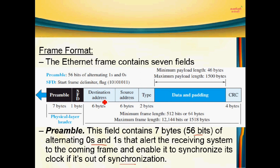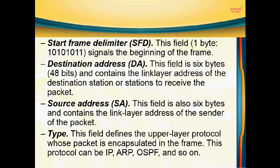Next we have destination address and source address. These are data link layer addresses — also known as MAC address or Ethernet address. Each address is 6 bytes long, which equals 48 bits. These fields indicate the destination and source nodes.